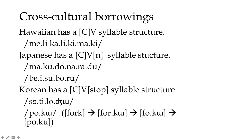Korean allows any stop in the coda position. When the speaker lived in Korea, the Pohang football team was called the Steelers, and fans would chant 'Sitilozi' — four syllables in Korean from the two-syllable English word. Similarly, 'fork' — borrowed into Korean — can't have a consonant cluster, 'r' in the coda is disallowed, and Korean has no 'f' sound, so it's replaced with 'p,' resulting in 'poku.' So 'fork,' one syllable in English, becomes two syllables in Korean.